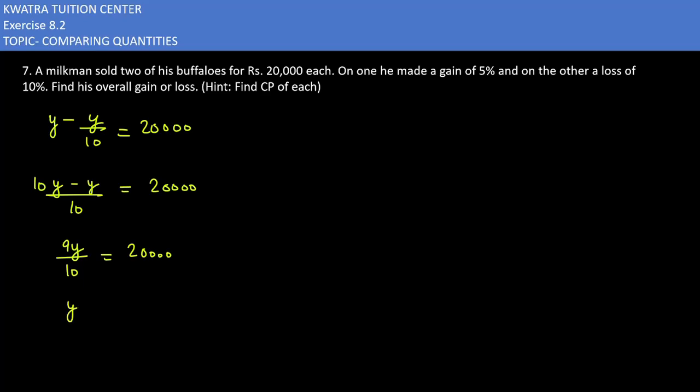Y equals 20,000 times 10 over 9. So you are getting the value as 200,000 over 9.